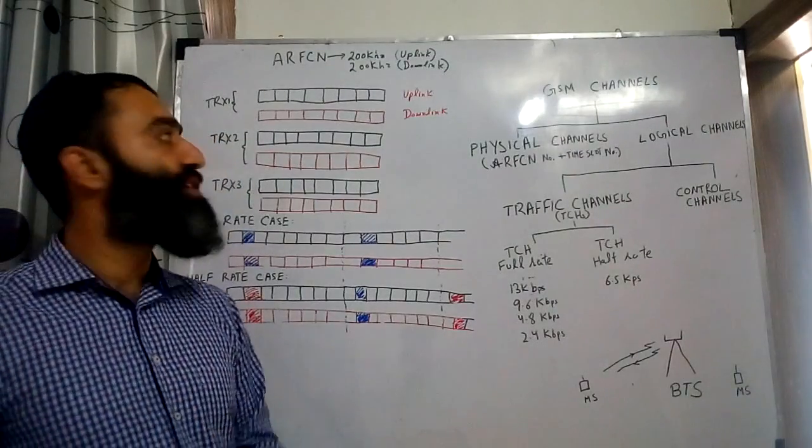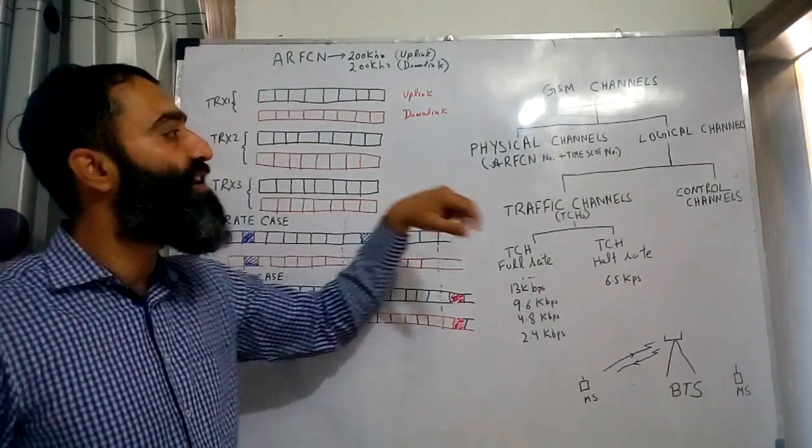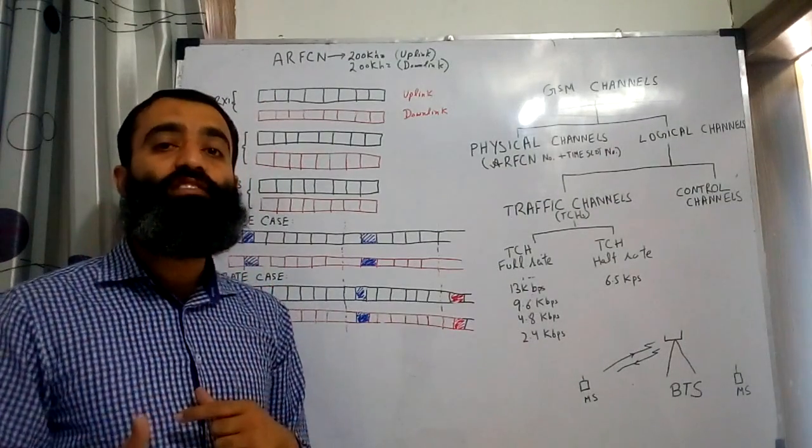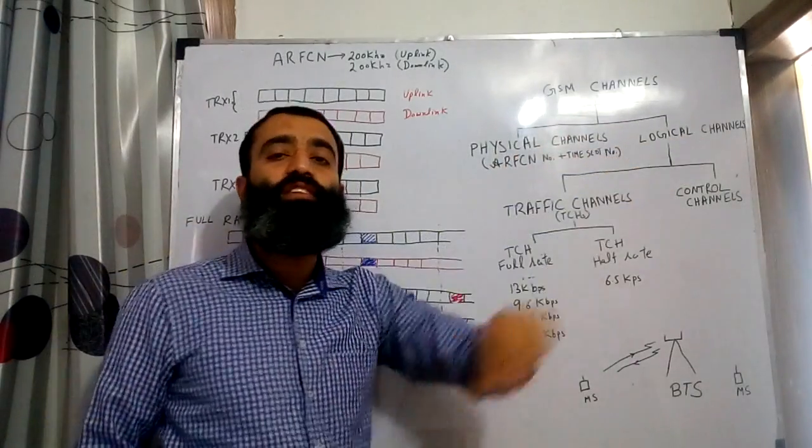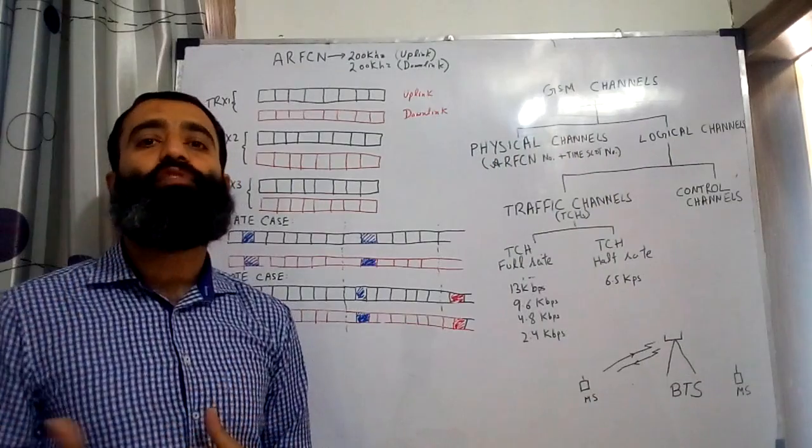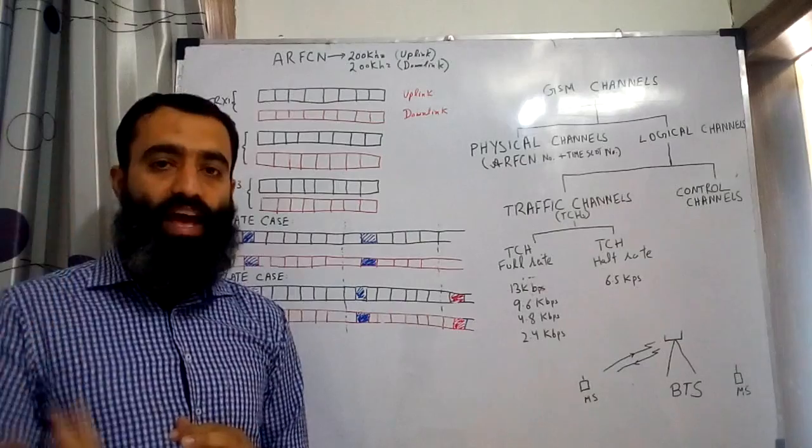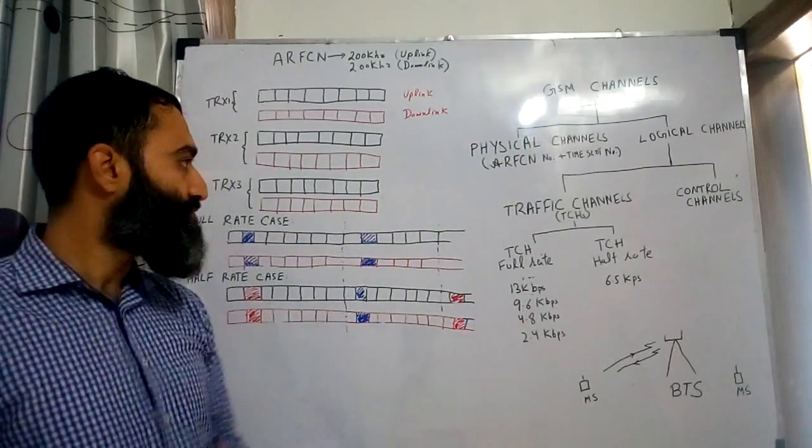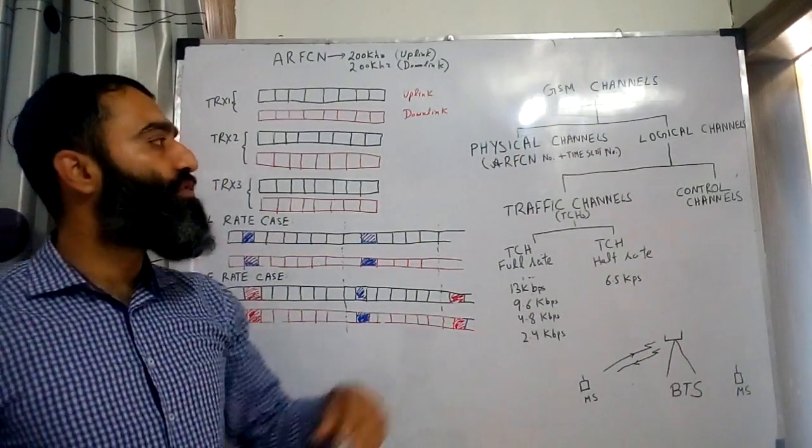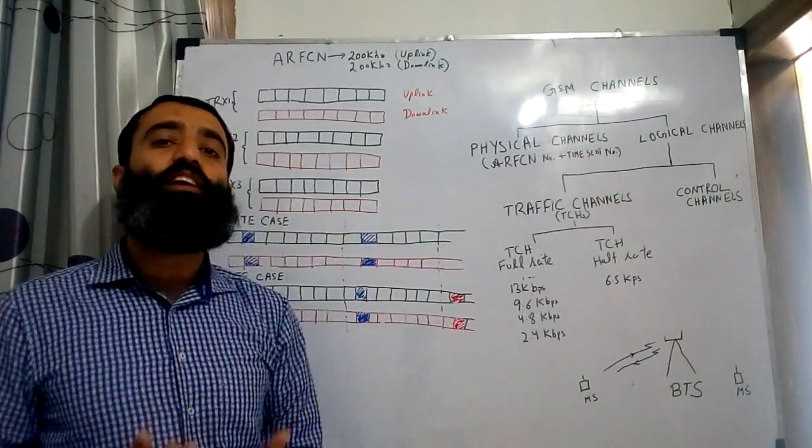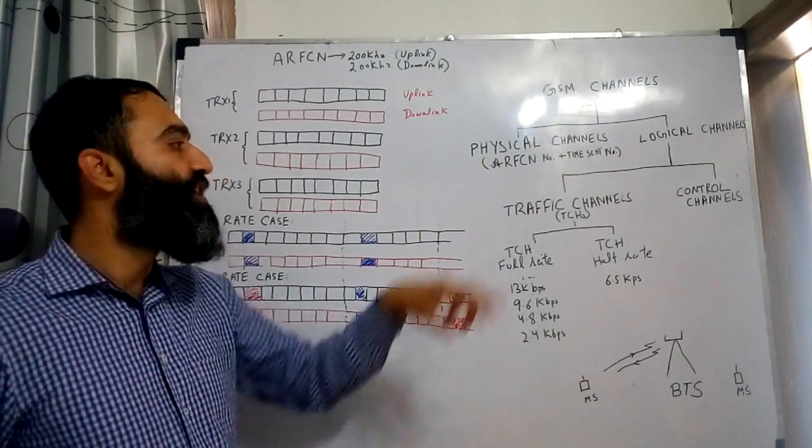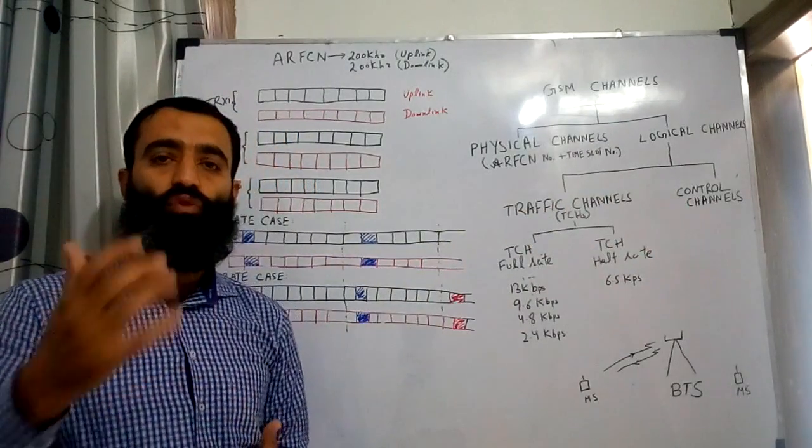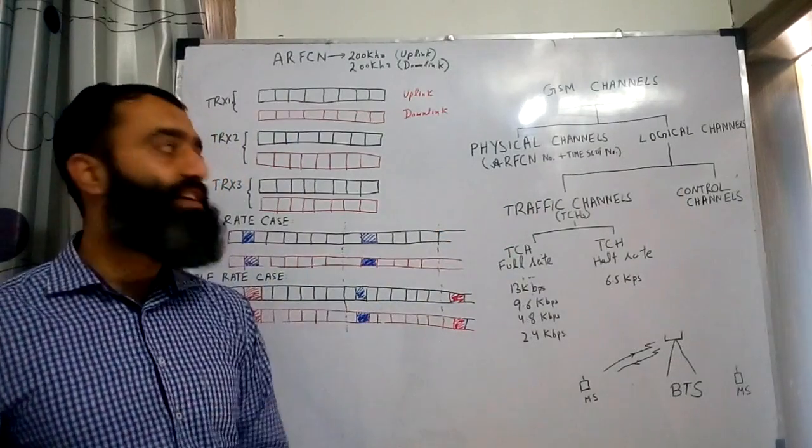Now the type of information that is being carried on this physical channel determines what type of logical channel this time slot is carrying. So logical channels are basically classified based upon the type of information that is being carried, and these logical channels are mapped onto the physical channels. When we talk about the logical channels, there are two main classifications: one is the traffic channels and the other is the control channel. We will talk about the control channels later on, but first we will talk about the traffic channels.